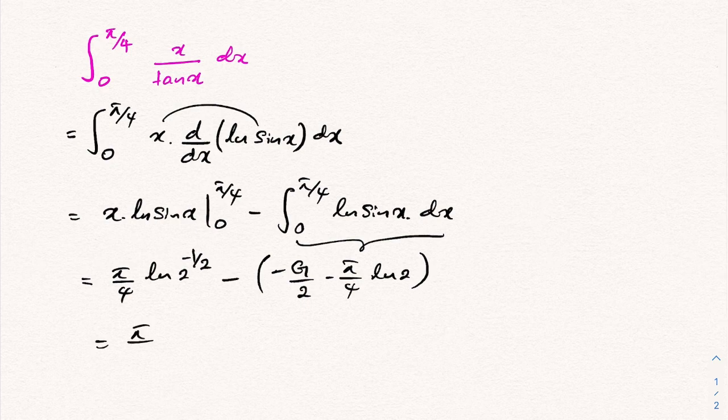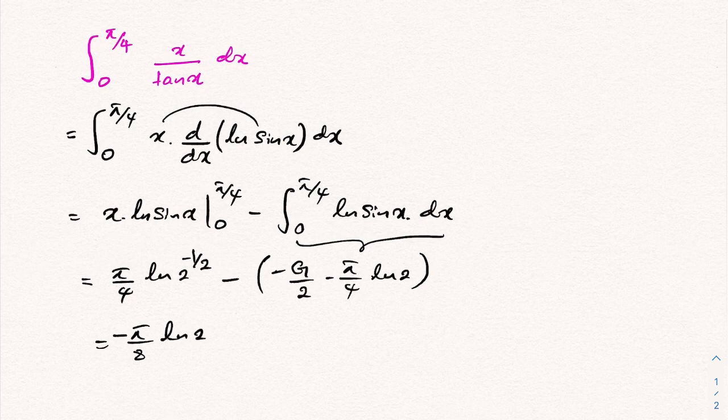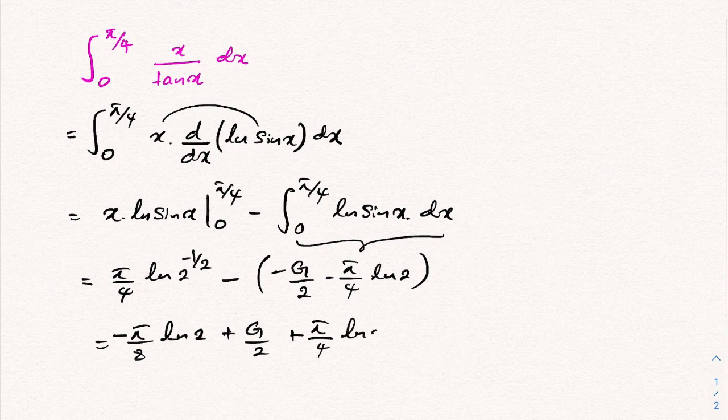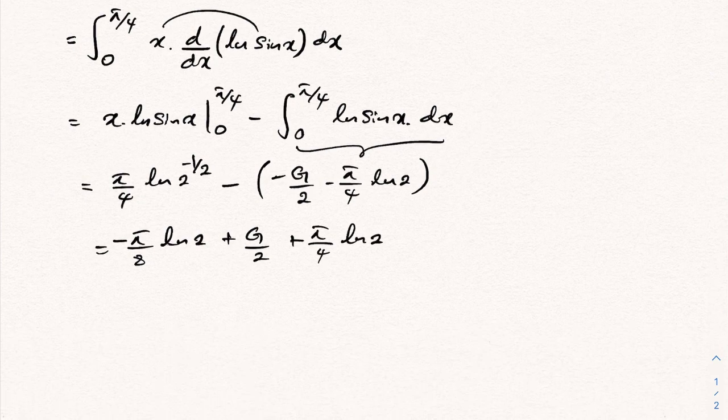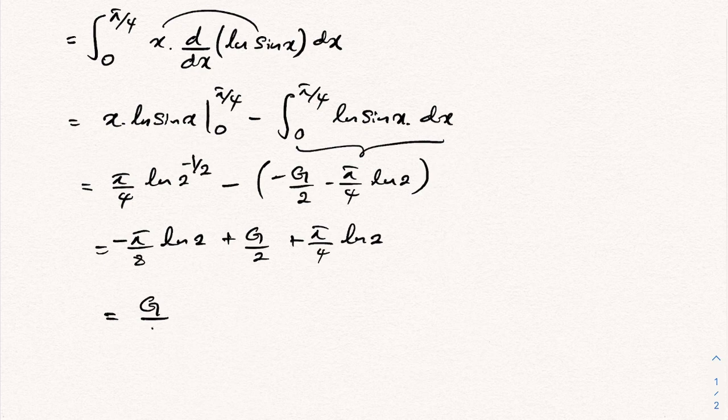Here we have pi over 8 natural log of 2. With the minus sign, minus pi over 8, then g over 2 plus pi over 4 natural log of 2. If we simplify, we have g over 2 plus pi over 8 natural log of 2.